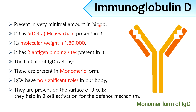Immunoglobulin D: IgD is present in very minimal amounts in blood. IgDs have delta type heavy chains. The molecular weight of IgD is 180 kilodaltons, and IgD has two antigen binding sites. The half-life of IgD is three days, and IgDs are present in monomeric form. IgDs have no significant roles in our body, but it is believed that they are present on the surface of B cells and help in B cell activation for the defense mechanism.